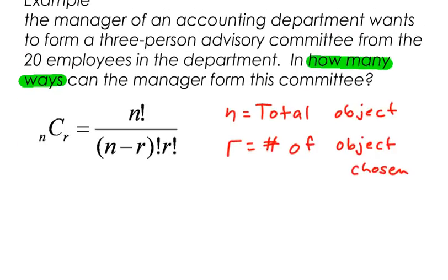So let's go ahead and do the math. Let's highlight a few other things in our problem. The manager of an accounting department wants to form a three-person advisory committee from the 20 employees. So from that, I can see that the total number of people, not objects in this case, n is equal to 20.